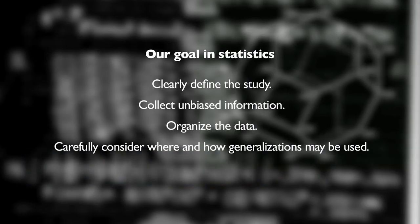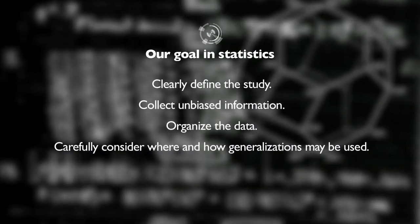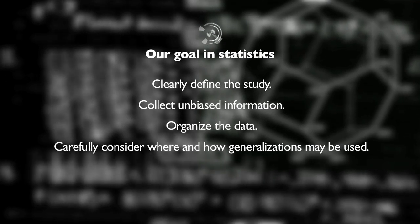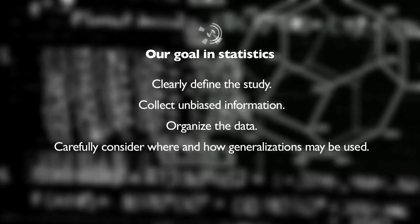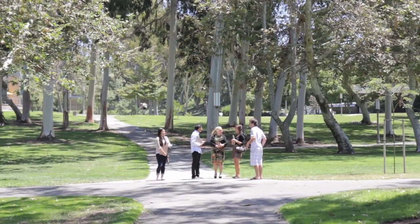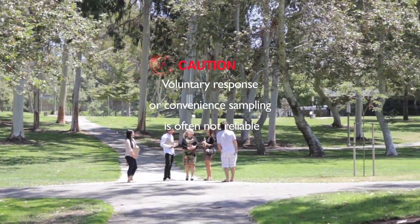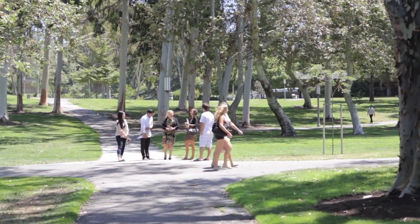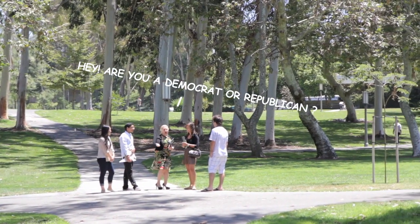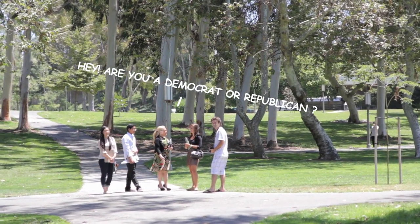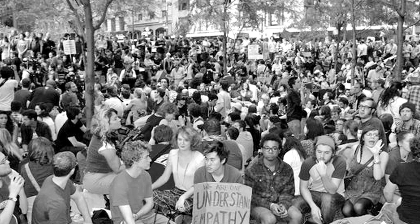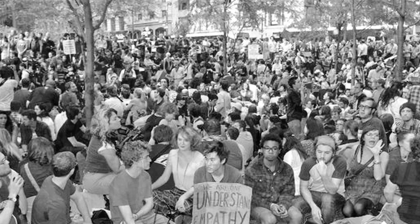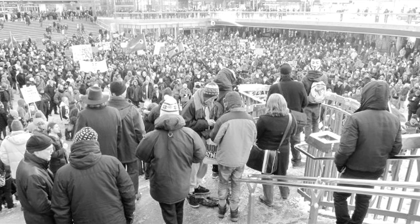There is a saying: garbage in, garbage out. Our goal in statistics is to carefully define the study, collect unbiased information, organize the data, and carefully consider where and how the generalizations may be used. Voluntary response or convenience sampling is often not reliable — respondents are self-selected or chosen because they are within close proximity and easy to obtain. When people have strong opinions, they are more likely to volunteer, so often only those who represent the extremes respond because they are the only ones who care enough to answer.